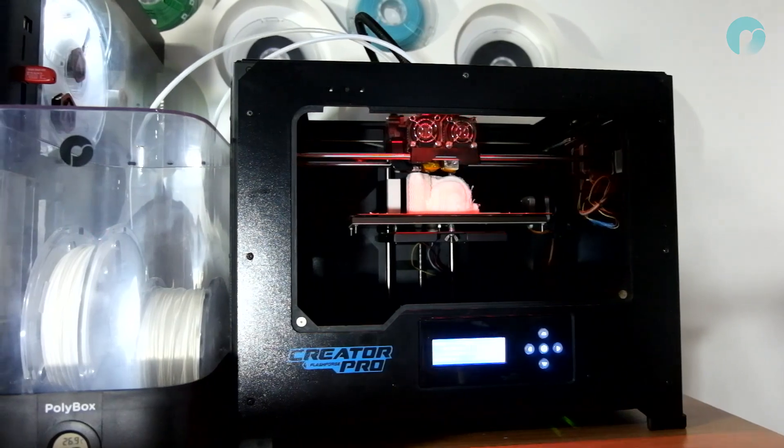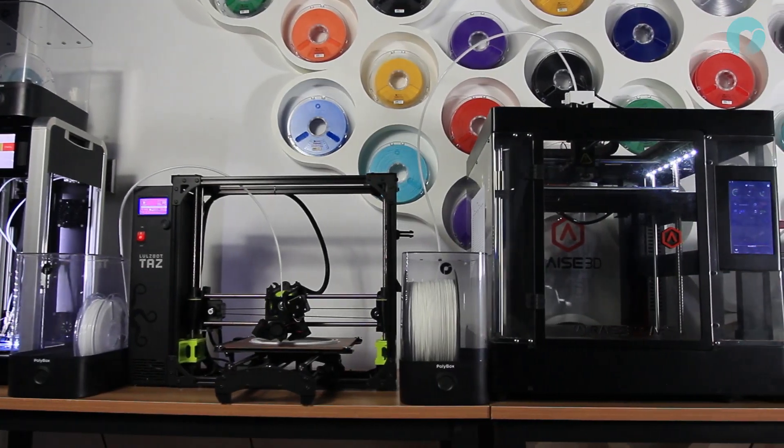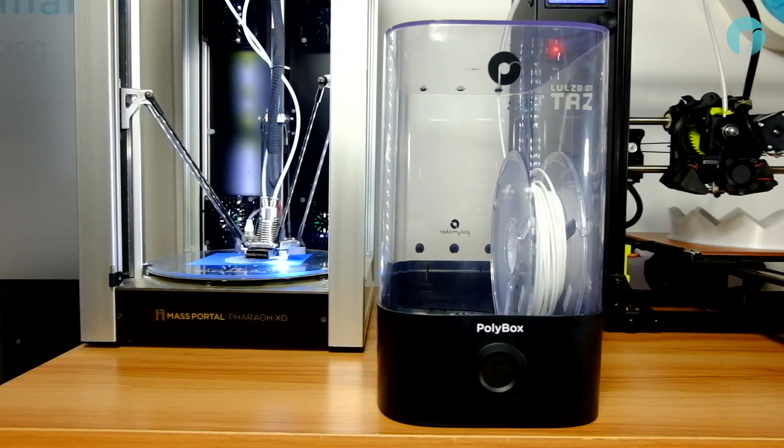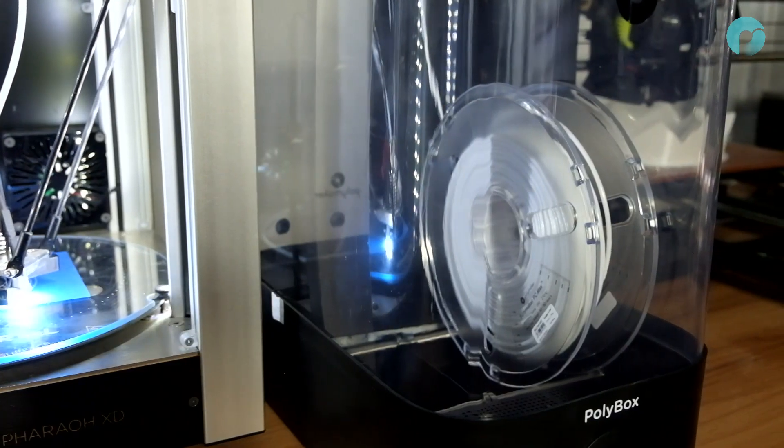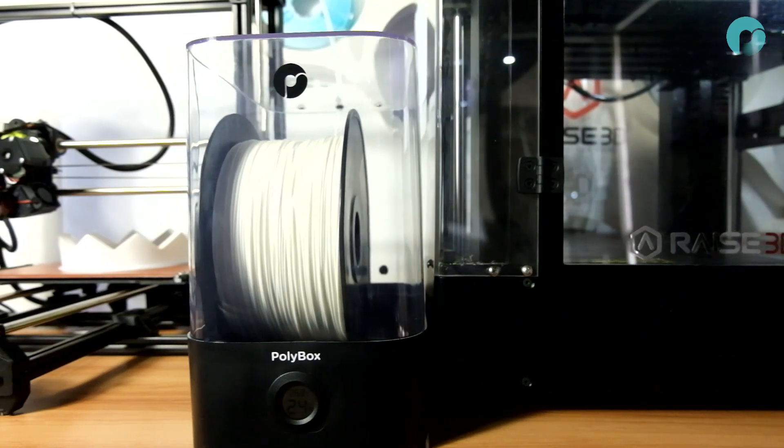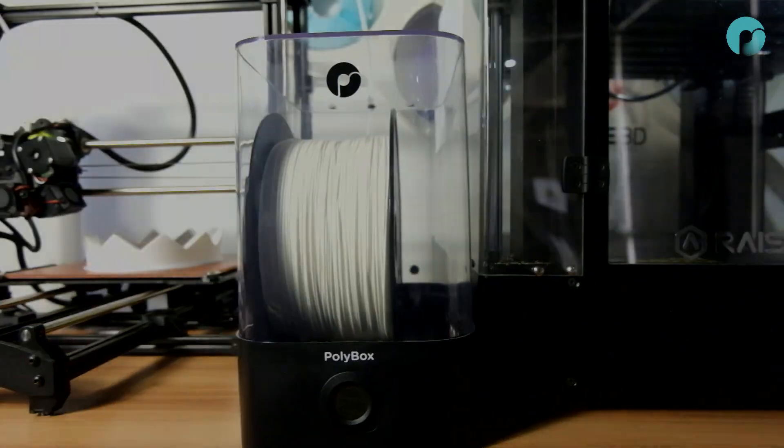Polymaker put a lot of effort into drying, storing and shipping your filaments so they arrive at their optimum printing quality. With more exotic materials coming out, we need a more exotic way to store and print these filaments. Polybox is the solution.